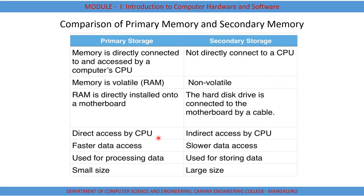Primary memory is faster, which is why it is directly accessible by the CPU, whereas secondary storage is slower but used for storing large amounts of data permanently. Primary memory is used for processing data and is much smaller, whereas secondary storage is much larger. However, primary storage is much more costly than secondary storage because of its speed.